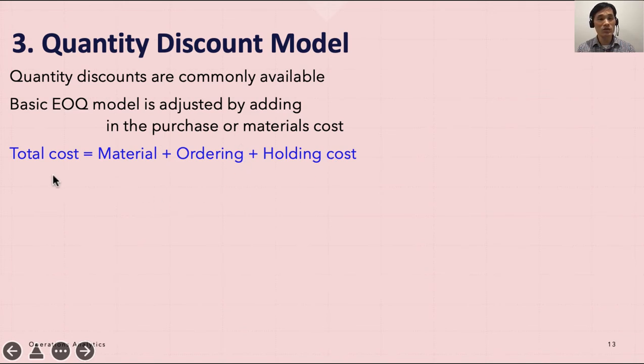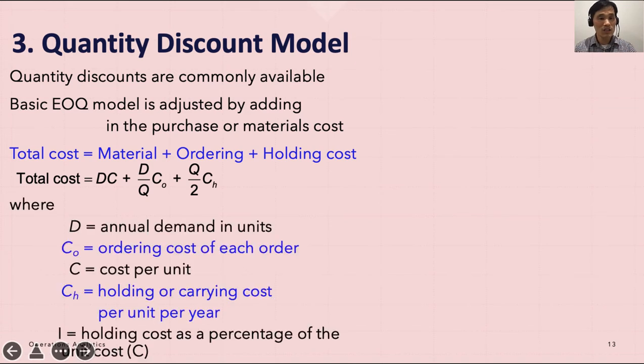The total cost equals annual demand times the cost, plus annual demand over EOQ times ordering cost, plus Q over 2, which is average inventory, times carrying cost or holding cost. This is the formula we're going to be using.